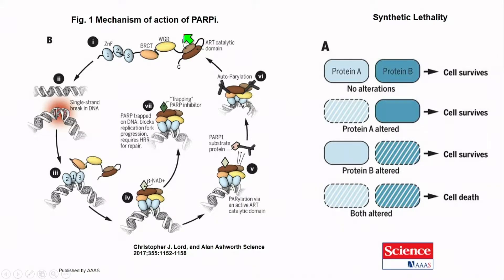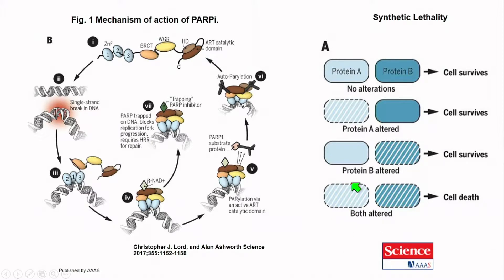We're going to talk a lot about BRCA1 and 2. The first concept is synthetic lethality: if you have a mutation in BRCA1 or 2, it doesn't cause cell death by itself, but it does lead to cancer because you get mutations. If you had another mutation in a DNA repair pathway, the cell could still survive, but if you get both mutated — BRCA1 knocked out plus a PARP inhibitor — it leads to cell death.